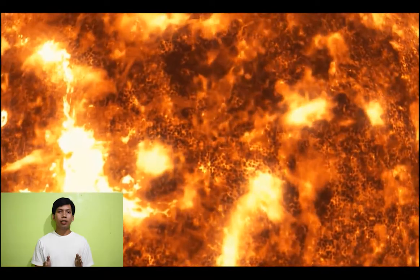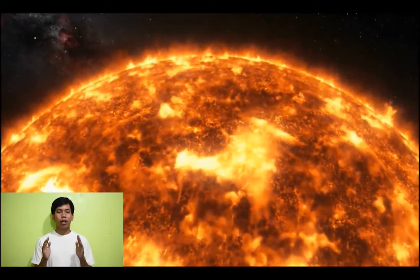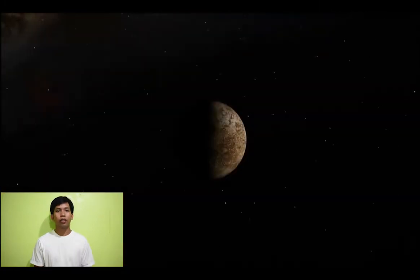And anything related to the sun we call solar. A planetary system is a set of gravitationally bound, star-like objects in or out of orbit around a star or star system. The sun, together with the planets revolving around it, including Earth, is known as the solar system.